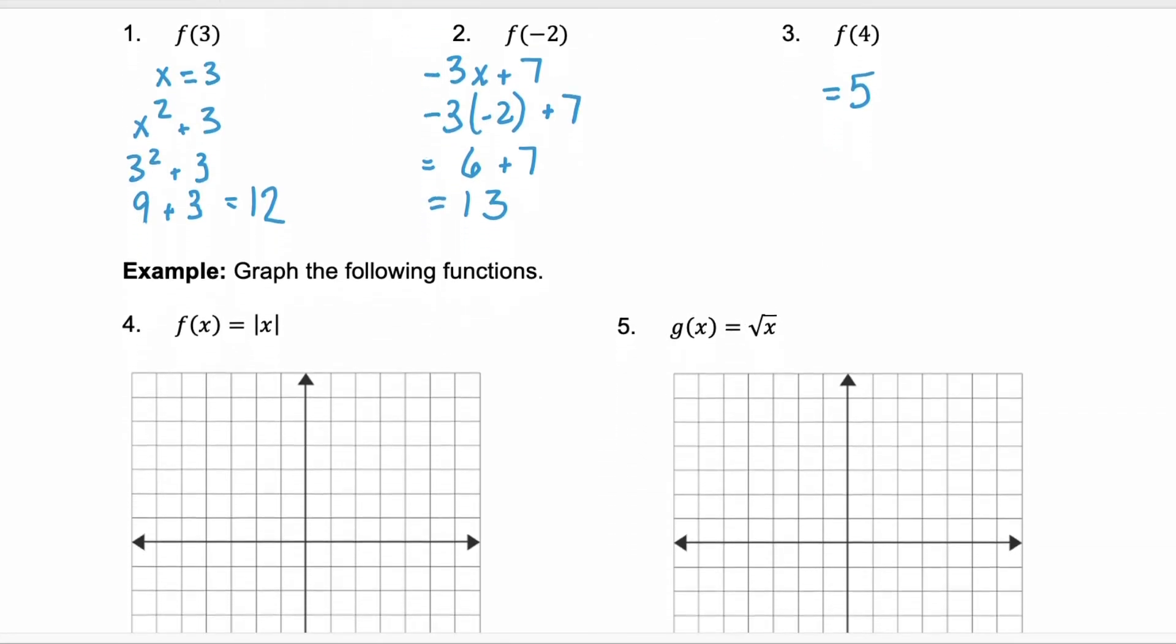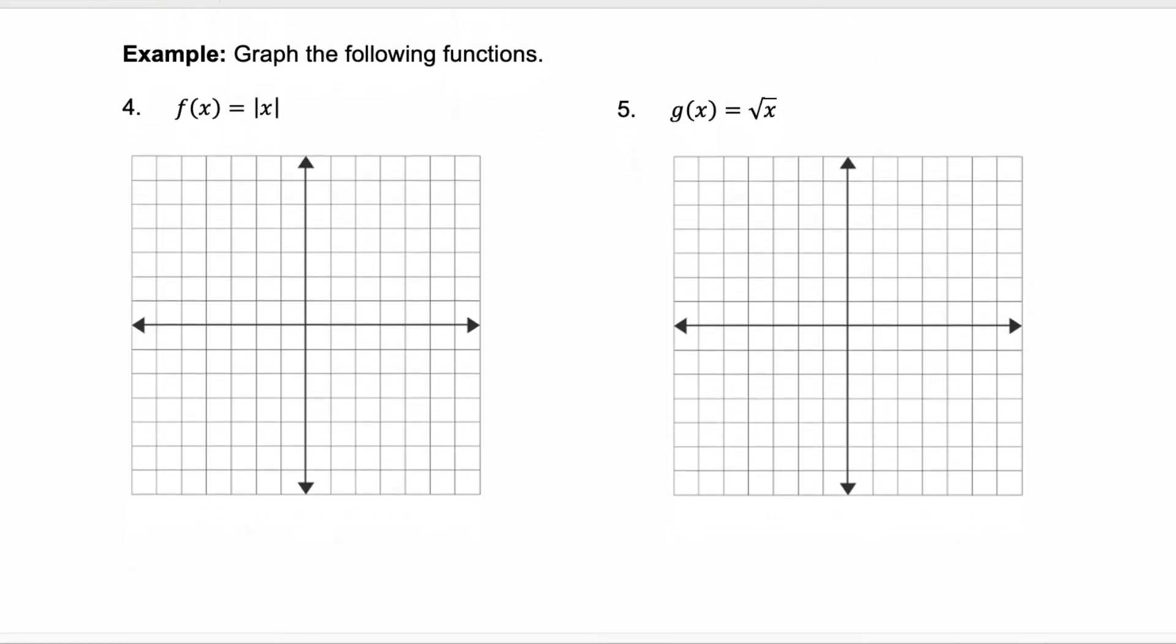Now, let's look at graphing functions and then graphing a piecewise function. So in examples 4 and 5, we're going to graph two different mother functions. The first is your absolute value function, which, remember, looks like a v. And then our second function, g of x here, the square root of x, has this shape. I need one more point to get a better shape here. There we go. So there's our square root function.